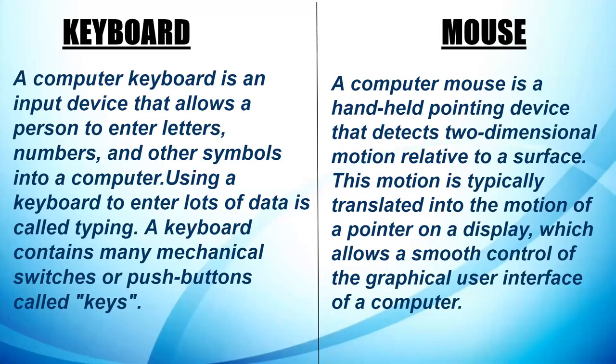Keyboard and mouse. A computer keyboard is an input device that allows a person to enter letters, numbers, and other symbols into a computer. Using a keyboard to enter lots of data is called typing. A keyboard contains many mechanical switches or push buttons called keys. A computer mouse is a handheld pointing device that detects two-dimensional motion relative to a surface, translated into the motion of a pointer on a display for smooth control of the graphical user interface.